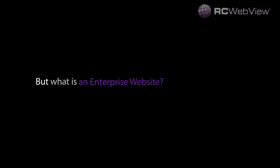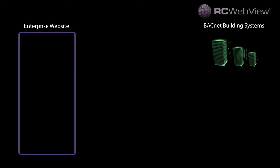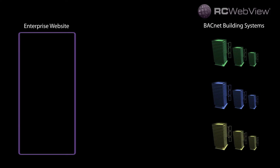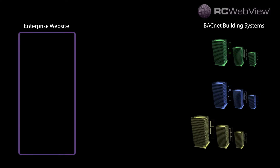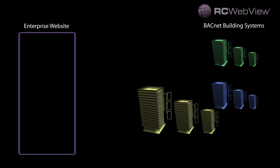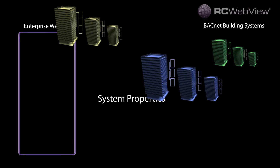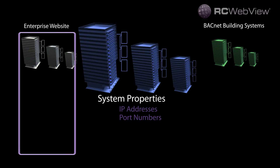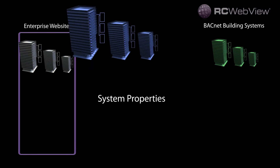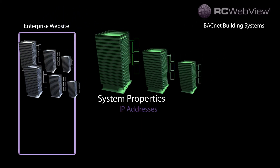But what is an enterprise website? The website's feature allows you to create an enterprise site and to attach multiple BACnet IP building automation systems. System properties such as IP addresses, port numbers, job files, and database names are configured for each BACnet building automation system that is added.